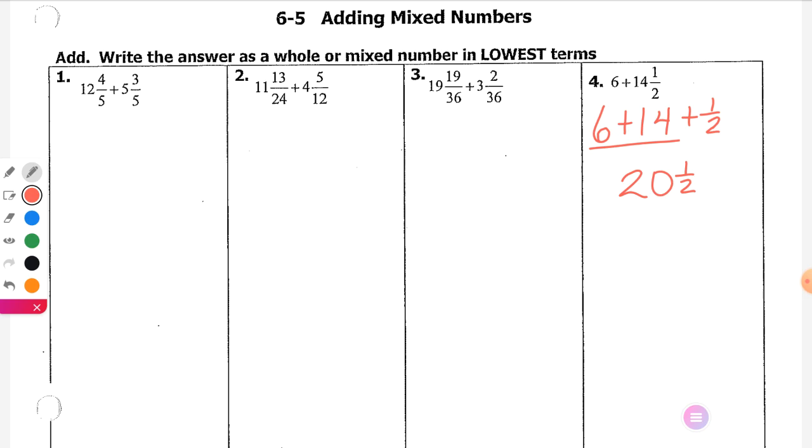Lily, why are they all pretty easy? Besides number 2. Why are number 1 and 3 both pretty easy? Yeah, they already have a common denominator. So Dom, tell me what I would do here. Okay, so 3 plus 4 is 7. What's my denominator? 5. 5.